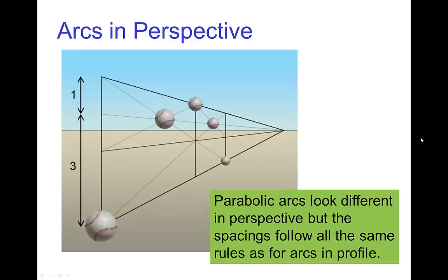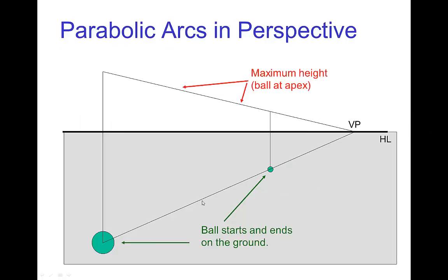Now, parabolic arcs in perspective are a little bit more complicated, but it's the same procedure. You have the starting point and ending point, and you pick the maximum height that you want for the arc. Now locating the middle is a little bit more complicated because we're working in perspective. So, here we use the diagonals to locate the center, and then draw a vertical from there, and then that's the position of the apex.